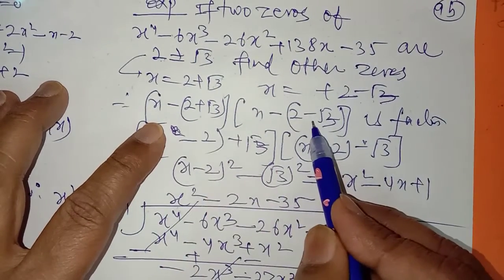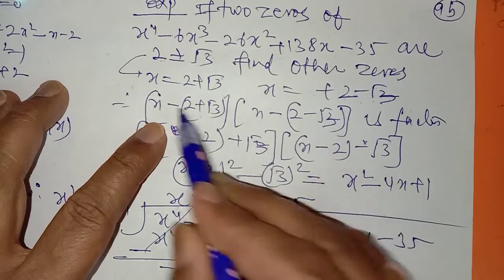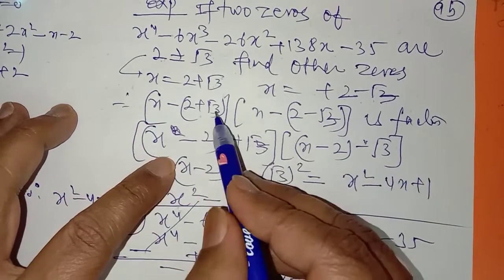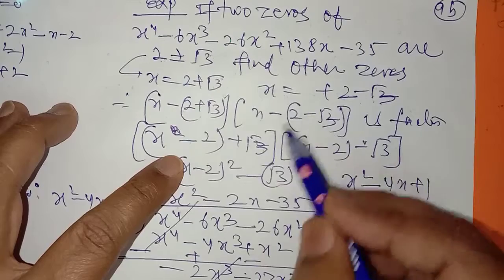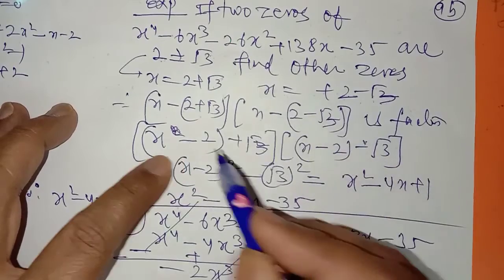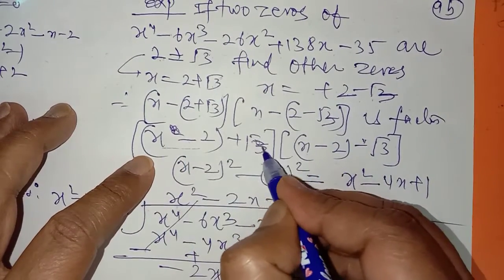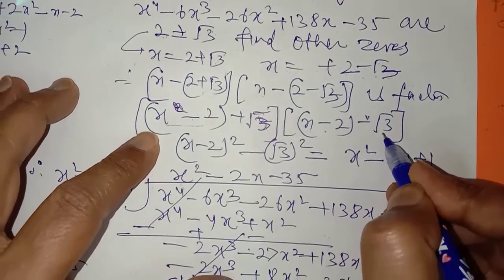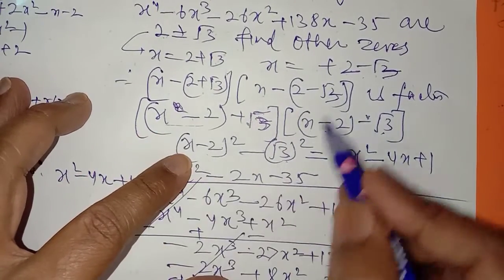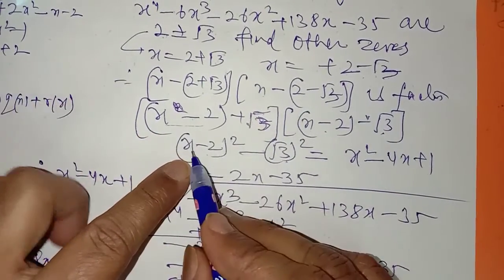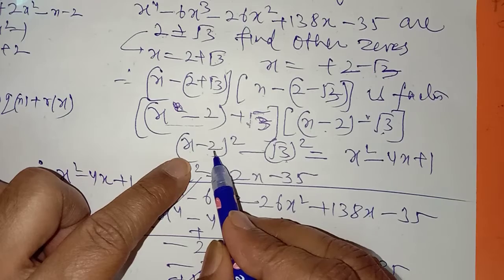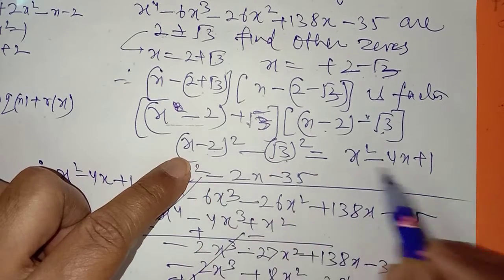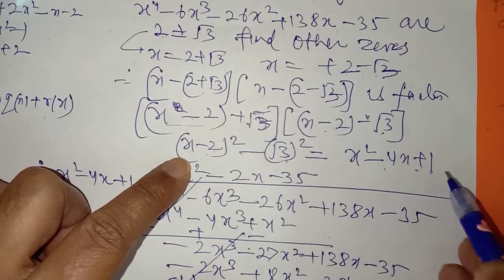a minus b اور a plus b کا formula کیا ہوتا ہے؟ اس کو arrange کرو — x minus 2 کو اکٹھا رکھو۔ یہ formula a plus b اور a minus b کا ہے، جو a square minus b square دیتا ہے۔ اس کو simplify کریں گے: a square minus 2ab plus b square، اور minus 3x square minus 4x plus 1 آ جائے گا۔